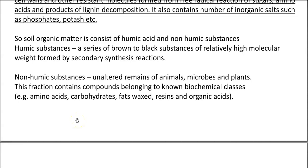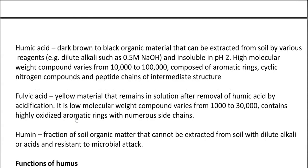Humic substances are further divided into humic acid, fulvic acid and humine. Humic acid is a dark brown to black organic material that can be extracted from soil by various reagents, especially dilute alkali such as 0.5 molar sodium hydroxide, and it is commonly insoluble at a pH of 2.